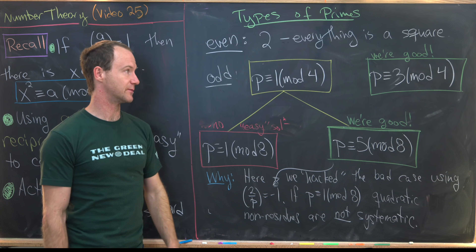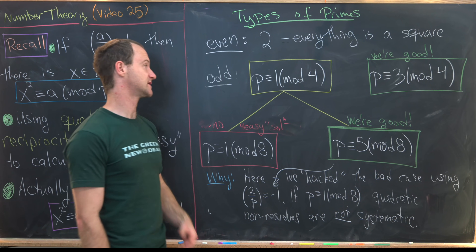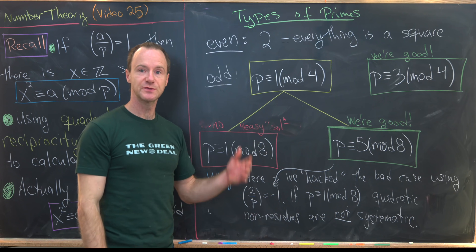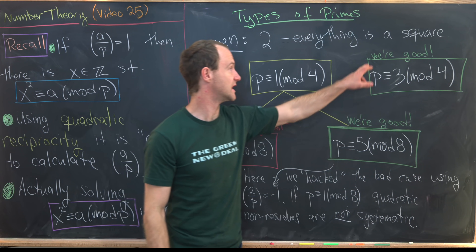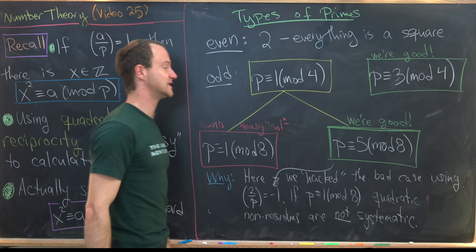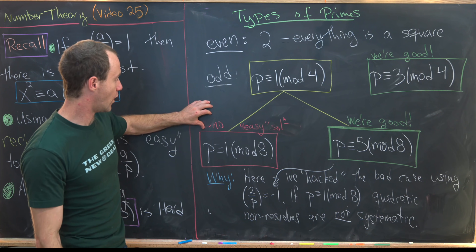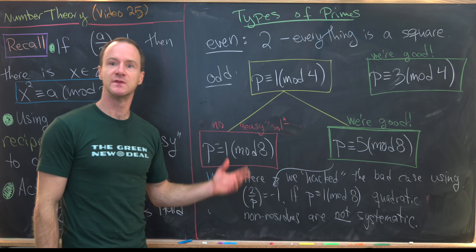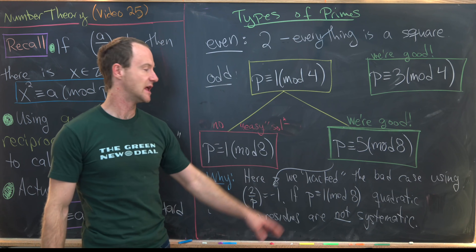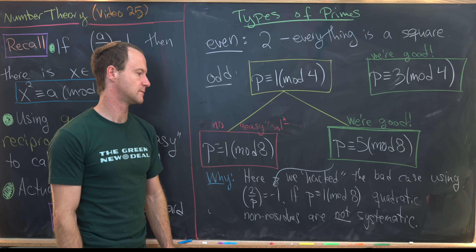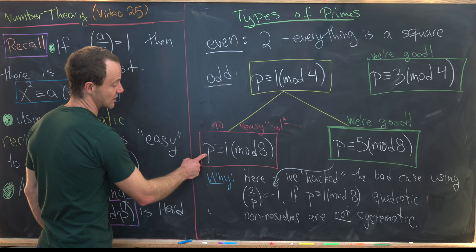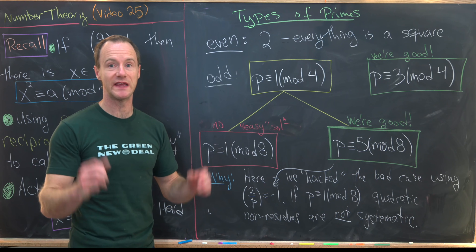For odd primes, you're in one of two cases: congruent to 1 mod 4 or congruent to 3 mod 4. The first proposition gave us a construction for a solution when p ≡ 3 mod 4. If p ≡ 1 mod 4, that splits further into p ≡ 1 mod 8 or p ≡ 5 mod 8. The second proposition handled the p ≡ 5 mod 8 case.